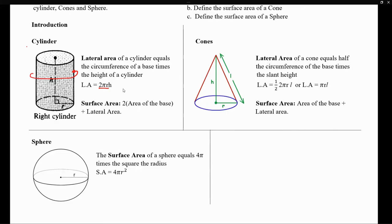For the surface area, it is equivalent to the lateral area plus the area of the top and the area of the bottom. Since the top and bottom are both circles, this becomes 2 times the area of the base. The base is a circle, so the full surface area is 2πr² plus the lateral area 2πrh. This is the explicit formula for defining the surface area of a cylinder.